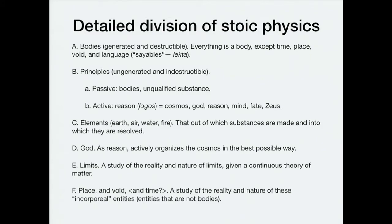Another way to divide Stoic physics, or rather an order in which to teach it: begin with the relatively straightforward idea of bodies — things that are generated and destroyed, including furniture, computers, people, animals, plants, and so forth. In fact, everything is a body according to this system, making Stoicism a kind of materialist system like the Epicureans — they think only bodies are real. Except there are some non-bodily things real in virtue of their relationship to bodies: time, place, void, and what I'm translating as language — more literally 'sayable things' or lekta — which I'll get to when we discuss Stoic logic.